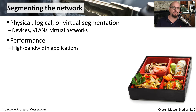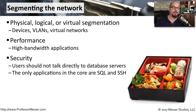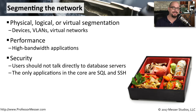One of the reasons we might want to provide network segmentation is for performance. We may have an application that requires high bandwidth, and by segmenting those onto their own network, we can ensure the highest efficiency possible. Another reason for segmenting the network might be for security. For example, we might want to have an application that communicates between a web server and a database server, but we might not want the users to have direct access to the database server. We might segment the users away from the core of our network, so we can monitor and make sure that the only thing running inside the core are the protocols necessary for those applications.